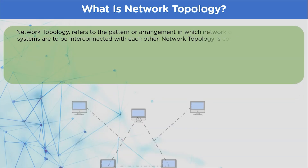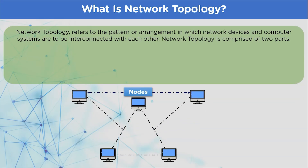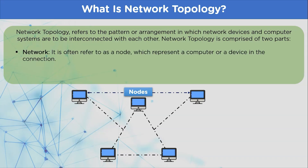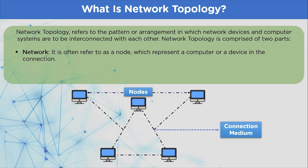What is network topology? It is referred to as an arrangement of multiple systems and network devices interconnected to each other through a physical medium or logical channel. The term network topology is a combination of two individual concepts: the network part, which represents the devices or nodes and how data is exchanged, and the topology part, which represents the connection medium between different network devices and governs the data flow between them.